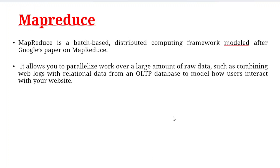The next component is MapReduce. MapReduce is a batch-based, distributed computing framework modeled after the Google MapReduce paper. It allows you to parallelize work over a large amount of raw data, such as combining web logs with relational data from OLTP databases to model how users interact with your website.